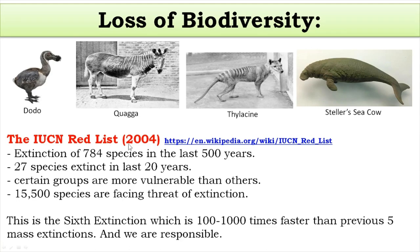In one of their lists released back in 2004, they documented the extinction of about 784 species in the last 500 years, and stated that in the past 20 years, 27 species have gone extinct. Among vertebrates, amphibians are more vulnerable to extinction compared to others, and marine corals are more threatened compared to other invertebrates. That 2004 IUCN Red List contains the names of 15,500 species of plants and animals which are facing the threat of extinction.